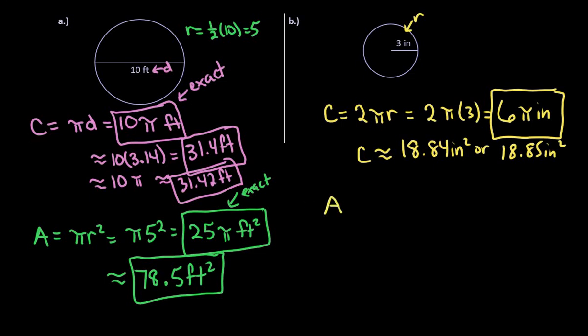For the area, we would just do pi r squared. So I would plug in pi times 3 squared, which would give me 9 pi. And again, because it's area, remember that our units are squared, so this would be our exact answer.